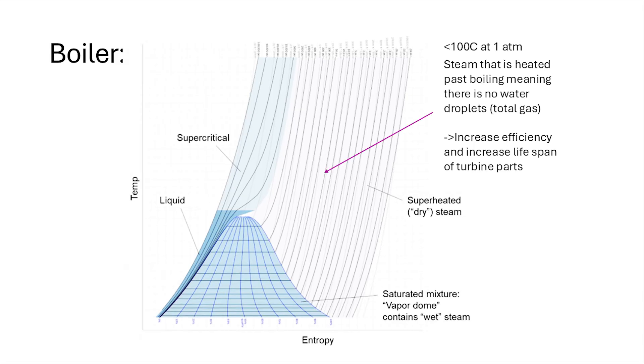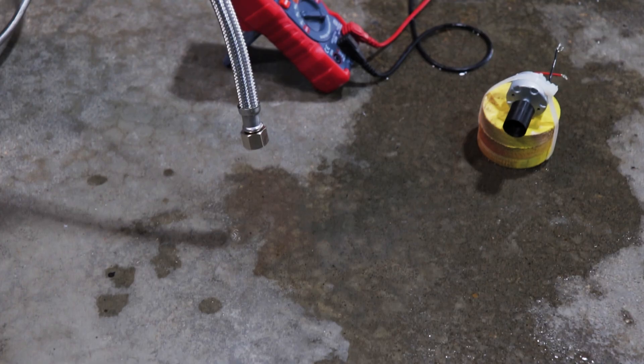Doing some quick research, it turns out most steam generation applications aim to be at least in the superheated region, meaning all of the water has been completely boiled into a gas. Since not only does that increase efficiency, but the drier steam leads to less wear and tear on components.